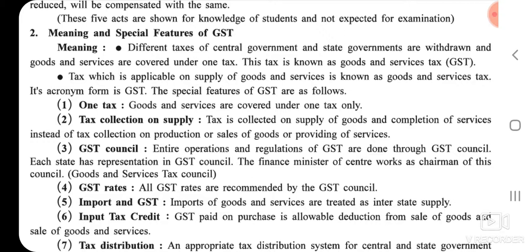The special features of GST are as follows. First: One Tax — goods and services are covered under one tax only. Second: Tax Collection on Supply — tax is collected on supply of goods and completion of service, instead of on production or sales of goods or providing of services.